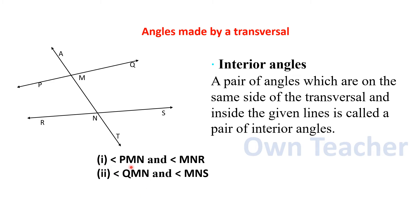For example, angle P, M, N and its pair angle M, N, R — these are interior angles. Again, angle Q, M, N and angle M, N, S — these are also interior angles. The angles that lie between the two given lines are called interior angles.